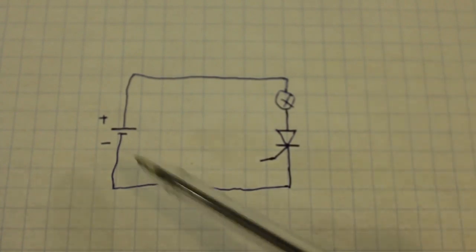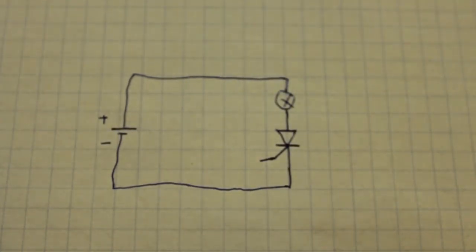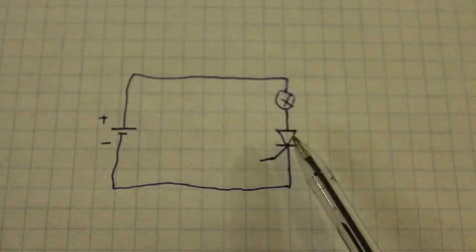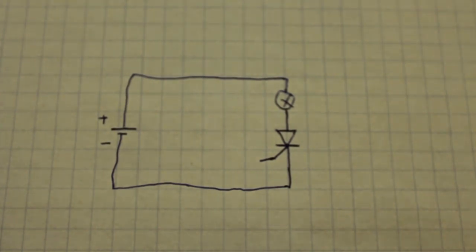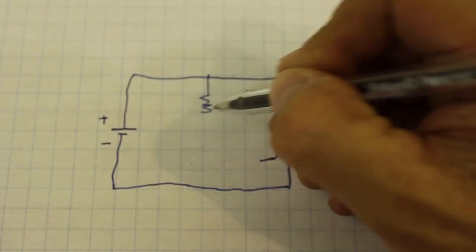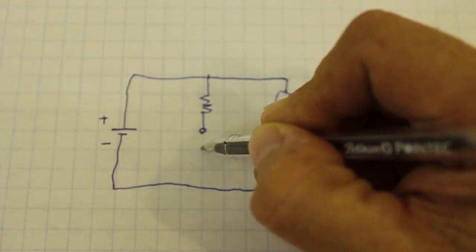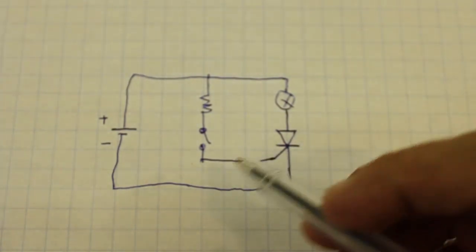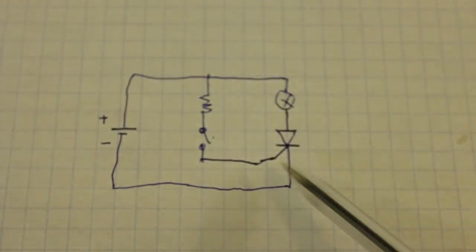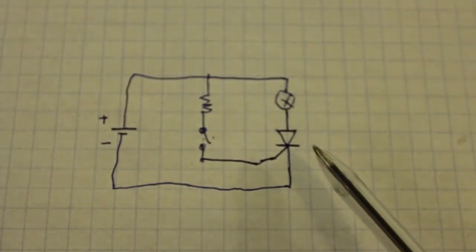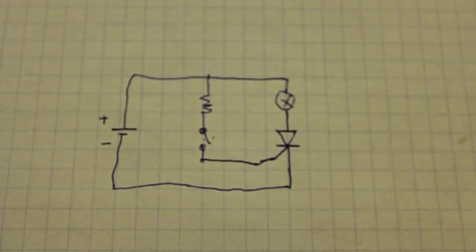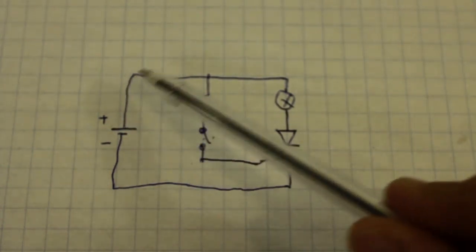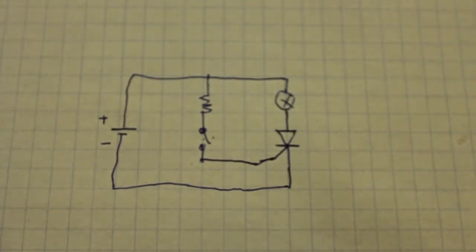But the current will not flow through the circuit until you turn on the thyristor. You do this by applying a small voltage to the gate through a resistor to limit the current, otherwise you can burn the thyristor. You can put a switch here. When you close the switch, the voltage at the gate turns on the thyristor and now it conducts current, so the current will flow through your load and turn on the lamp.